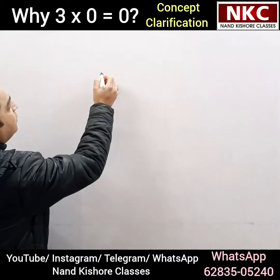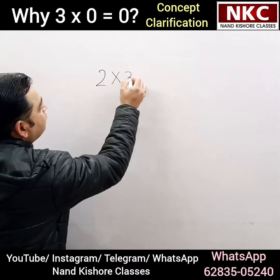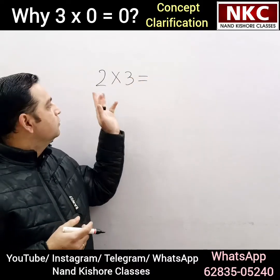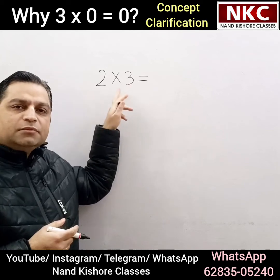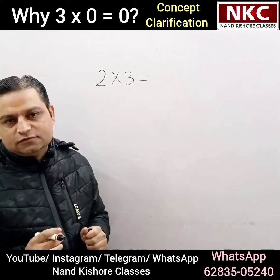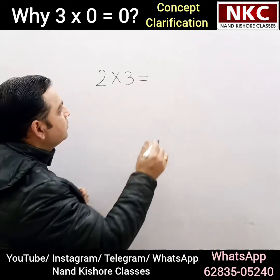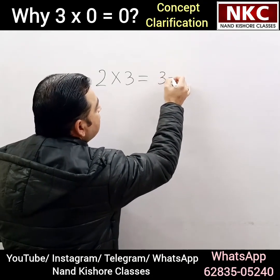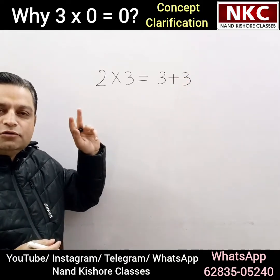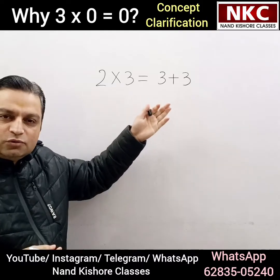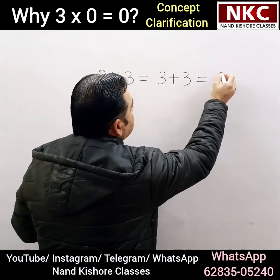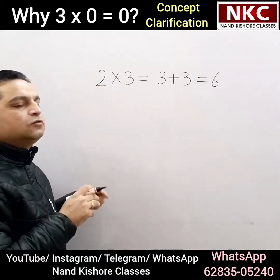Let's suppose we have 2 times 3. I'll come to zero later, but let us try to understand what does it mean. 2 multiplied by 3 means addition of 3, two times. So I am adding 3 two times — that means 3 plus 3, which gives me 6 as an answer. So 2 times 3 is 6.